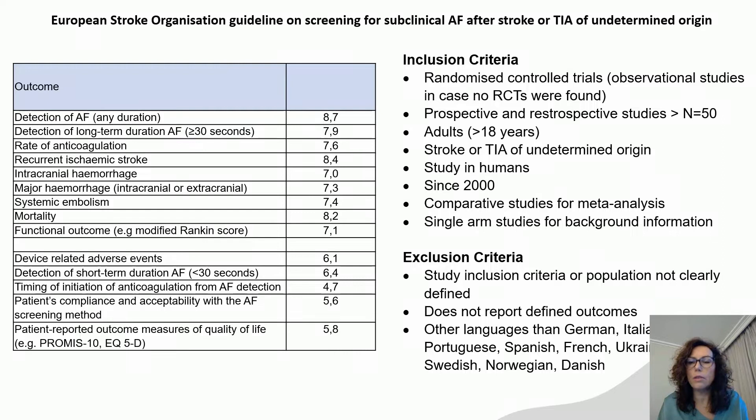You can see here the inclusion and exclusion criteria for the studies. I want to remark that we exclusively chose studies aimed at patients with a stroke or TIA of indeterminate origin. Some studies that may be relevant but included patients with different stroke etiologies are not in the meta-analysis, but wherever we thought they were relevant, we included them in the publication.